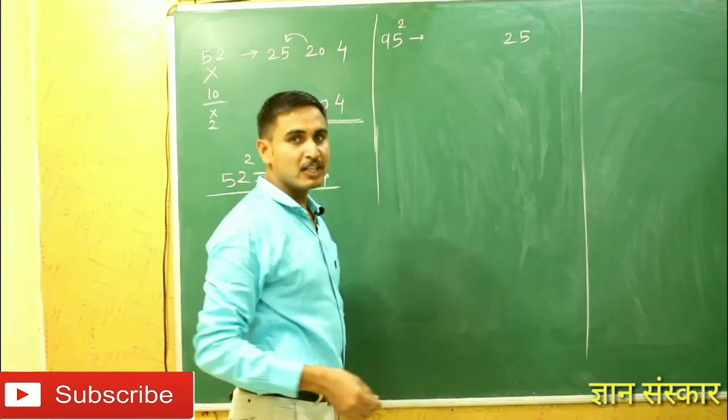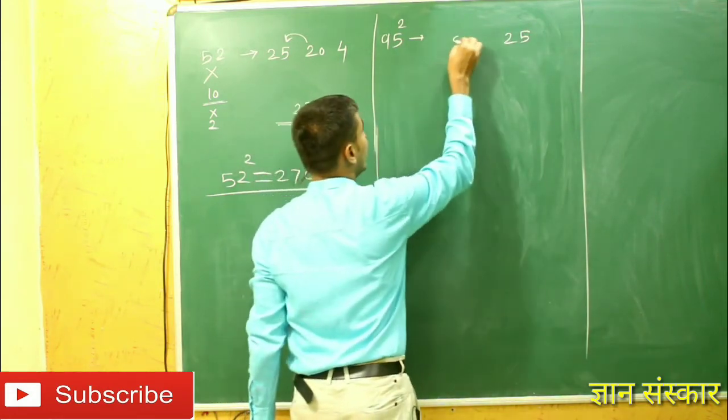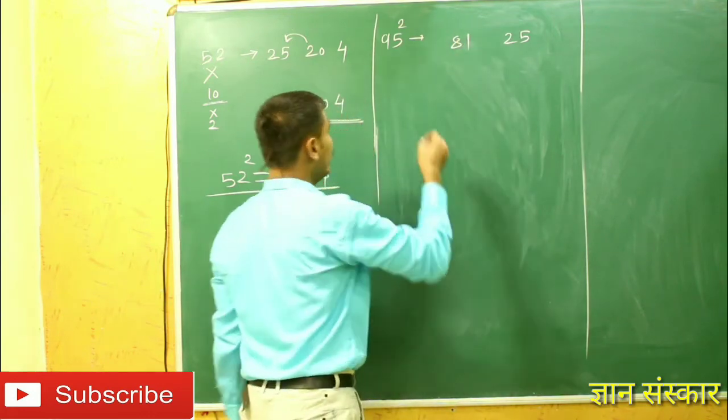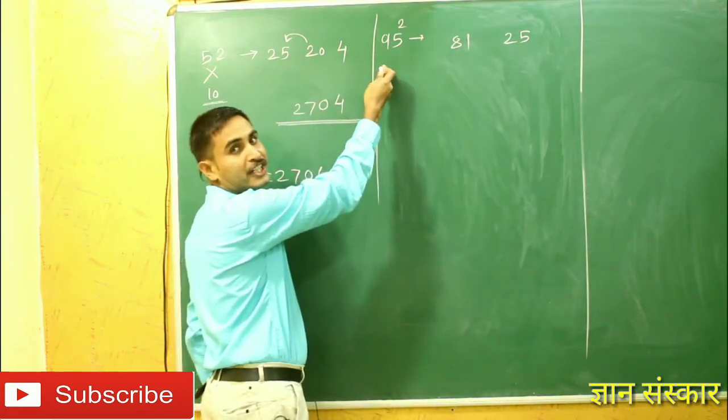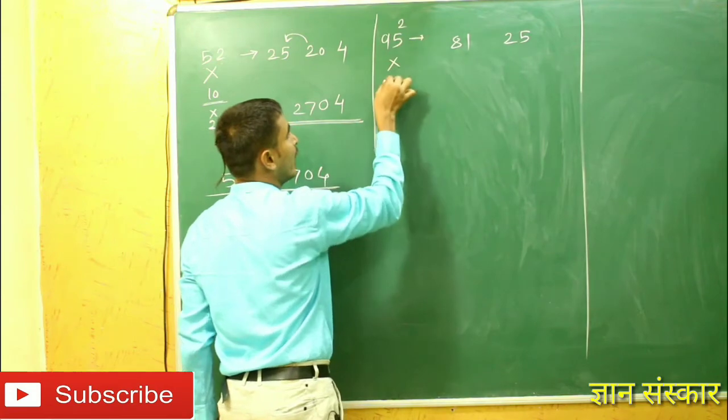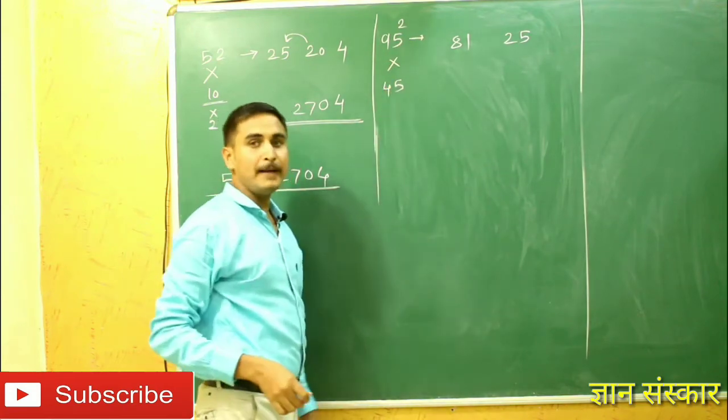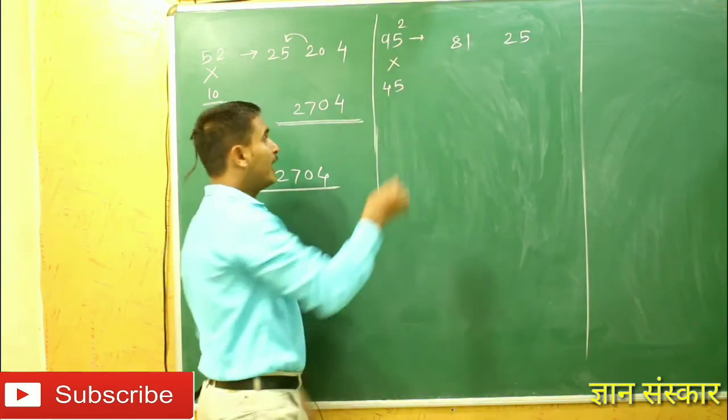Then we will carry out the multiplication of both the digits: 9 multiplied by 5, that is equal to 45. The product should be doubled and it will become 90. 90 should be written here.